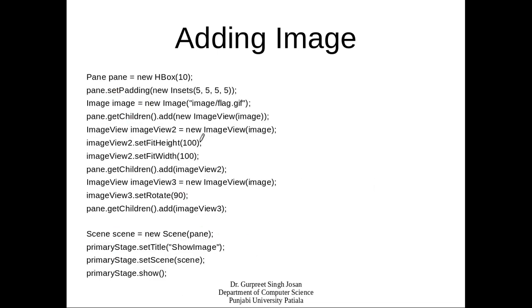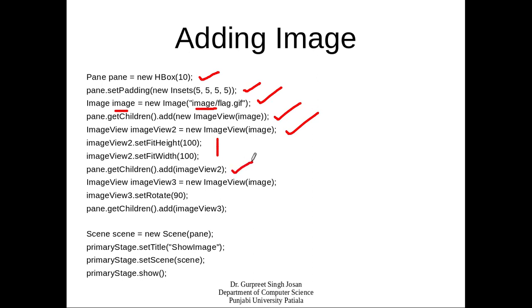Here is a simple example. I have created a pane using HBox and set its properties. Then I created an Image object from a given image and added it to the pane. After that, I created another image, set its fit height and width to 100 by 100, and added it in the same way. You can add any number of images. Finally, I add the pane into the scene, the scene into the stage, and show the stage.